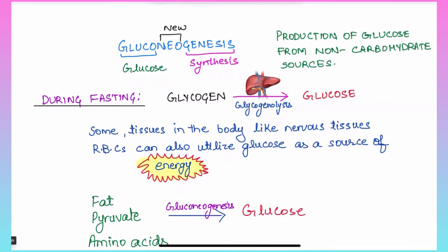Gluconeogenesis takes place inside the body parallel to glycogen breakdown. Gluconeogenesis means: gluco = glucose, neo = new, genesis = synthesis. So gluconeogenesis means glucose anabolism — that is, production of glucose from non-carbohydrate precursors. We need non-carbohydrate precursors because we are not having carbohydrate-rich food from outside in our diet.